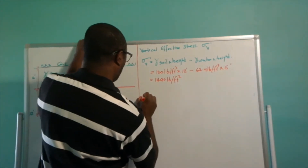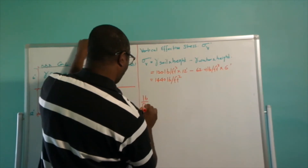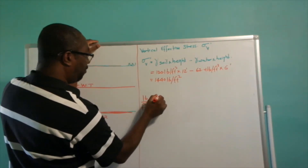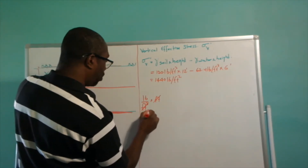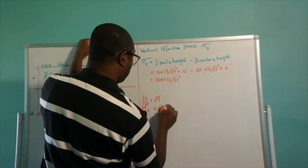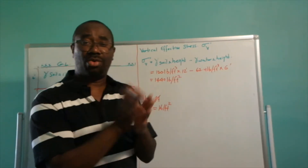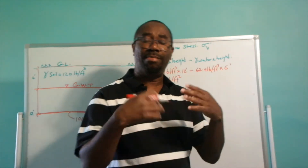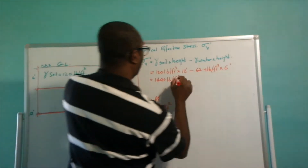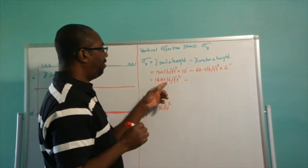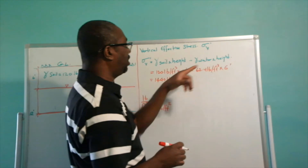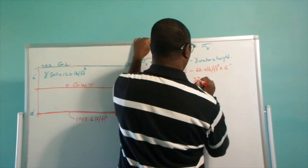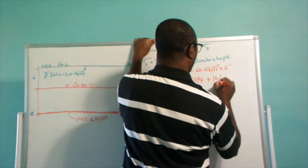Let me show you how I arrive at that. We have pounds divided by feet cubed times feet. If we divide one feet into the cube, we end up with feet square. That is how I get pounds per feet square. Pounds per feet square, or Newton per meter square, is how we measure pressure or stress. So the stress equals 1440 pounds per feet square, and 6 times 62.4 gives us 374.4 pounds per feet square.